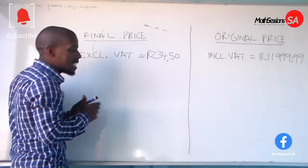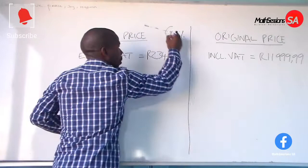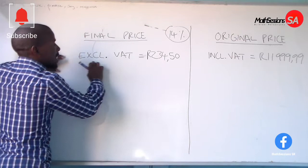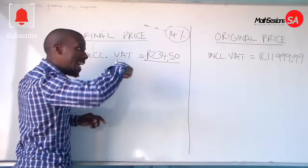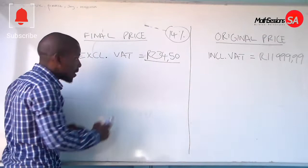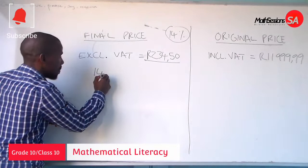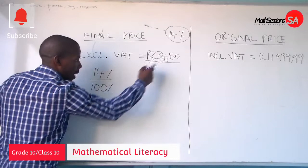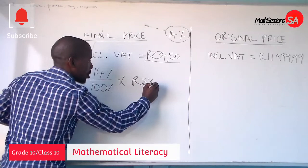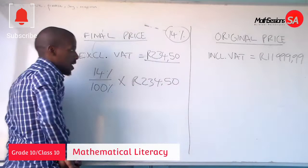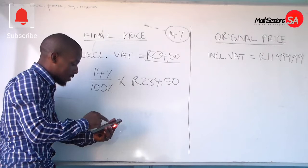Now, when Value Added Tax is being excluded, we are going to work with 14% VAT. If Value Added Tax has been excluded on this price, it means you need to add 14% of this amount onto the original amount. So we take 14% of the total percentage of the price and multiply it by the original price, which is R234.50, to get the 14% portion.